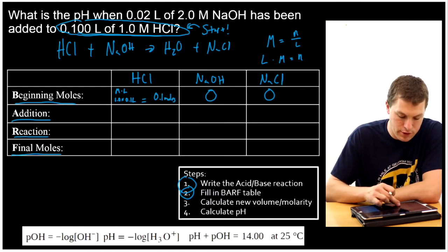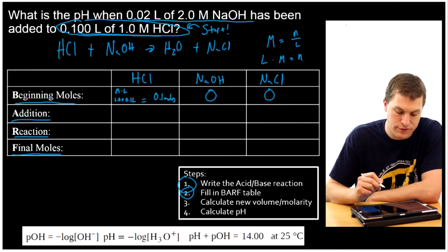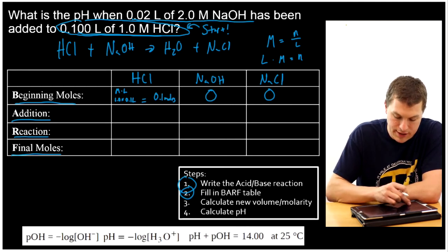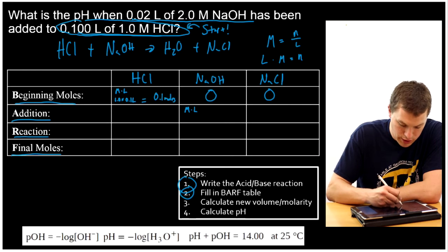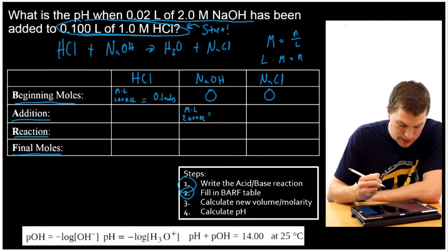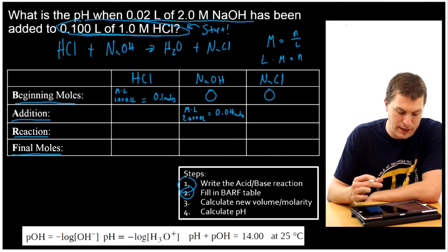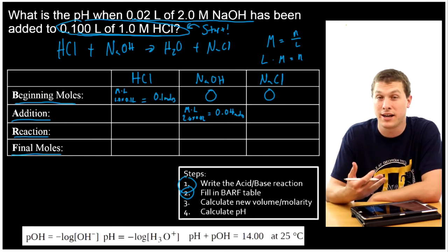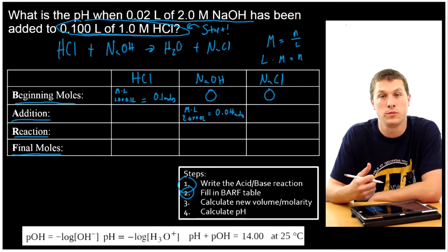Now I'm going to go to my addition row. I added 0.02 liters of 2 molar NaOH. To know my addition, I'm going to use molarity times liters, which is 2.0 times 0.02, and when I do that I get 0.04 moles. I have to do my BARF tables in terms of moles because I need to know how many molecules there actually are — which is what moles tells me, not concentration.